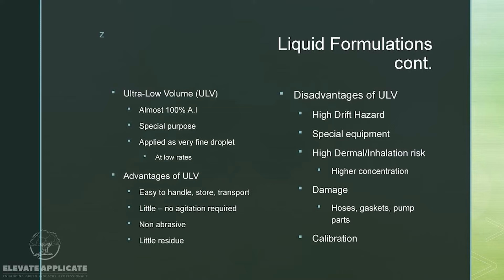Ultra low volume, also known as ULV — solutions are almost 100% active ingredient, generally serve a special purpose, and are applied as a very fine droplet at low rates. Advantages: easy to handle, store, transport; little to no agitation required; non-abrasive; little residue. Disadvantages: high drift hazard because fine droplets can carry to different locations easily, sometimes require special equipment at added cost, high risk of dermal and inhalation hazard, higher concentration can cause more damage and worse health effects, can damage hoses, gaskets, pump parts, and calibration is difficult.